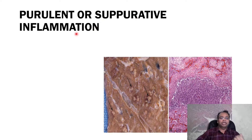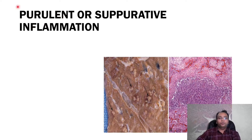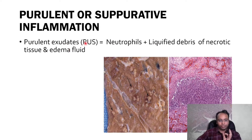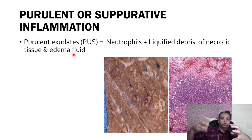Purulent or suppurative inflammation is the fourth morphological type of acute inflammation. Grossly, you can see purulent exudate deposition over the lung — this is the case of pneumonia. This diagram is from Robbins' book of pathology. Microscopically, you can see a lot of neutrophils and a lot of pus. Purulent means there is a presence of pus — purulent exudate means pus formation. Pus means neutrophils, liquefied debris of necrotic tissue, and edema fluid.